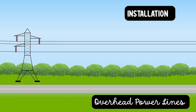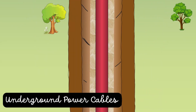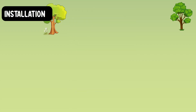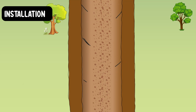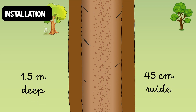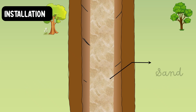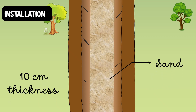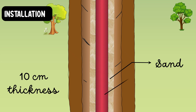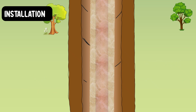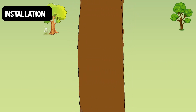The installation of overhead power lines starts with the setting of towers or poles. The power lines are tied to the towers through insulators, which give mechanical support to the power lines. The installation of underground cables requires digging a trench of about 1.5 meters deep and 45 centimeters wide. The trench is covered with a layer of fine sand of about 10 centimeters in thickness, the cable is laid over this sand bed, then covered with another layer of sand, bricks and other materials.